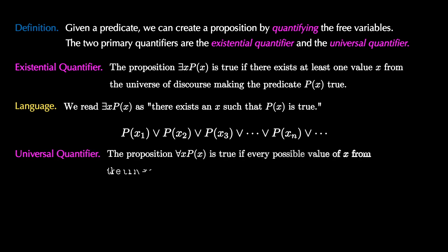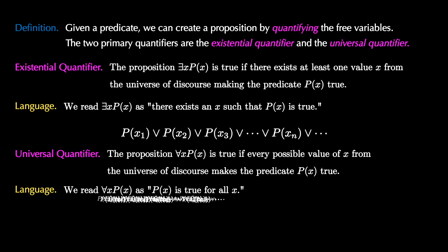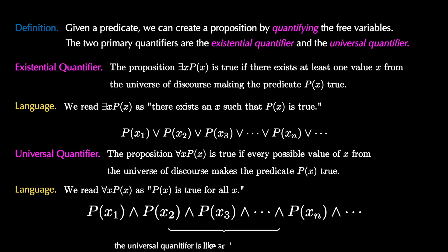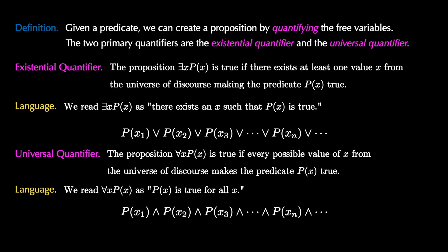The universal quantifier, on the other hand, written as an upside-down A, is true if every possible value of x from the universe makes the predicate true. For this one, we say P(x) is true for all values of x. Just like the existential statement, we can think of the universal as being an infinite 'and' over our universe. We need all of the propositions to be true, no matter which value of x we plug in.